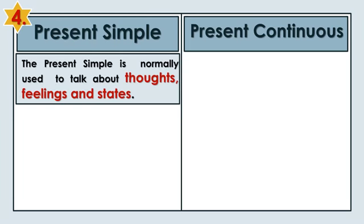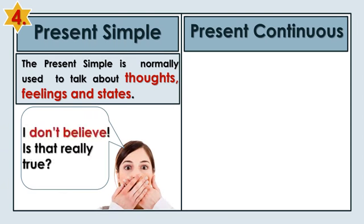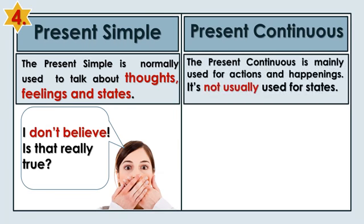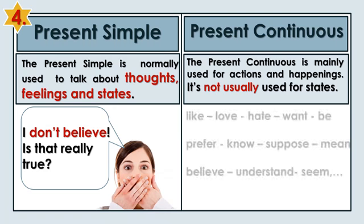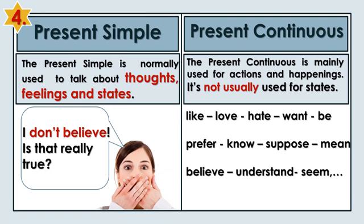The Present Simple is normally used to talk about thoughts, feelings, and states. I don't believe! Is that really true? The Present Continuous is mainly used for actions and happenings. It's not usually used for states. Like, love, hate, want, be.